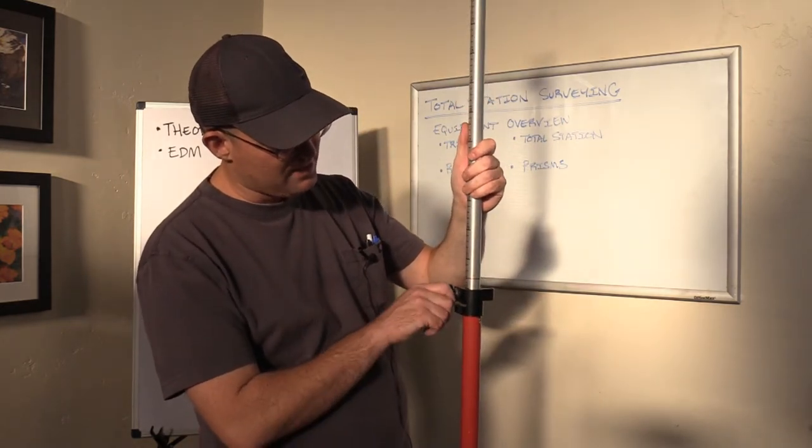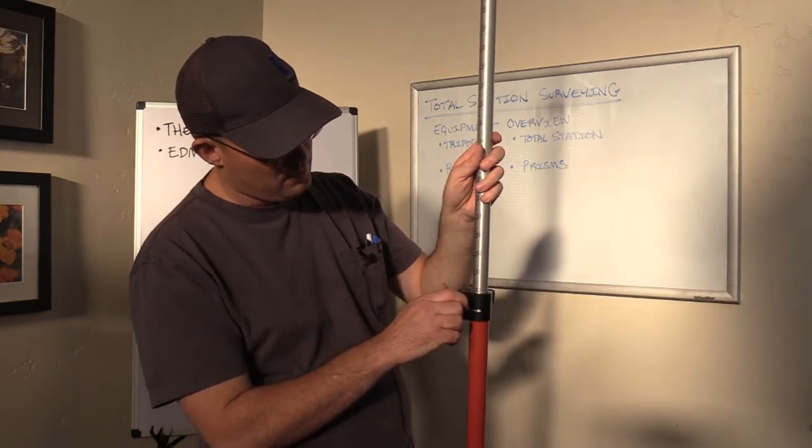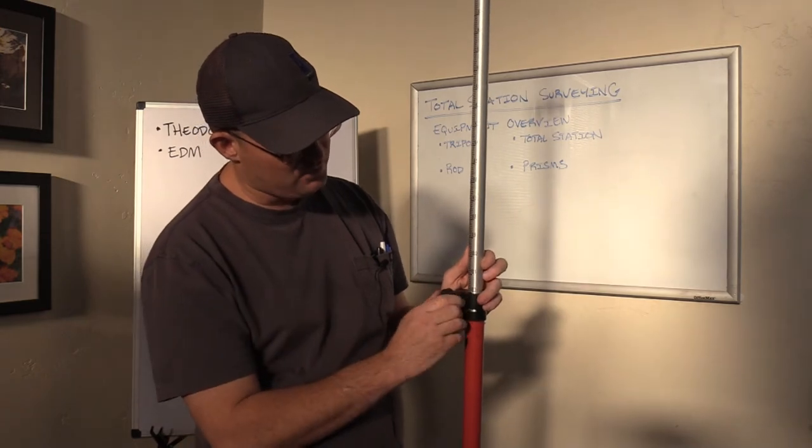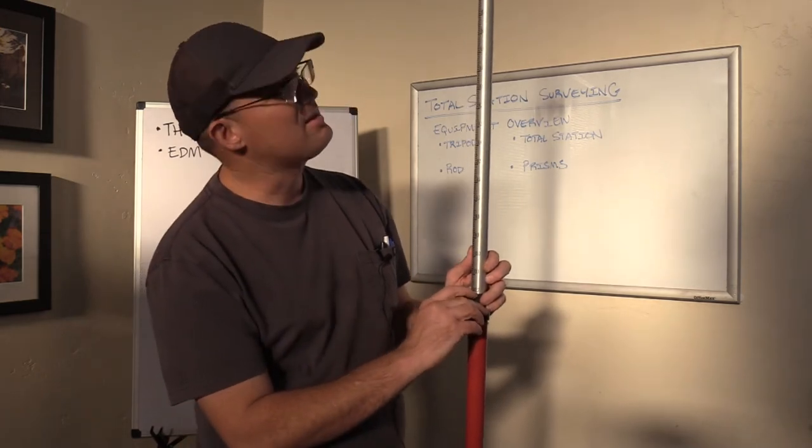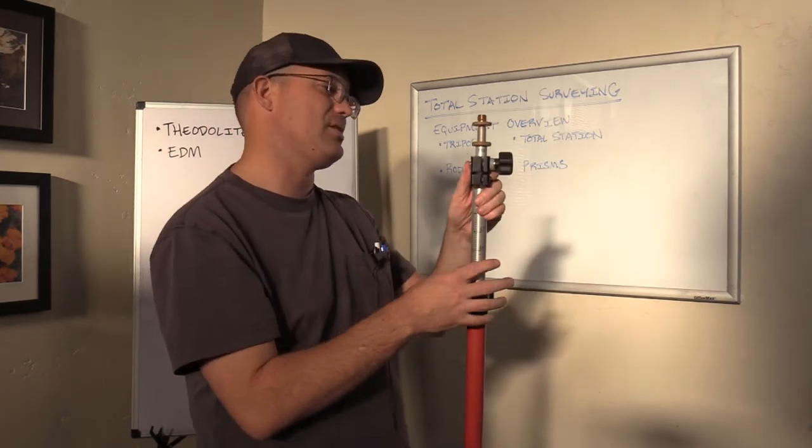If this rod is adjusted properly, wherever you set the rod to clamp, when you clamp this knob down, that right there says 10.2. If I had this all the way extended, the rod would be 10 feet tall. Now this can get out of adjustment.